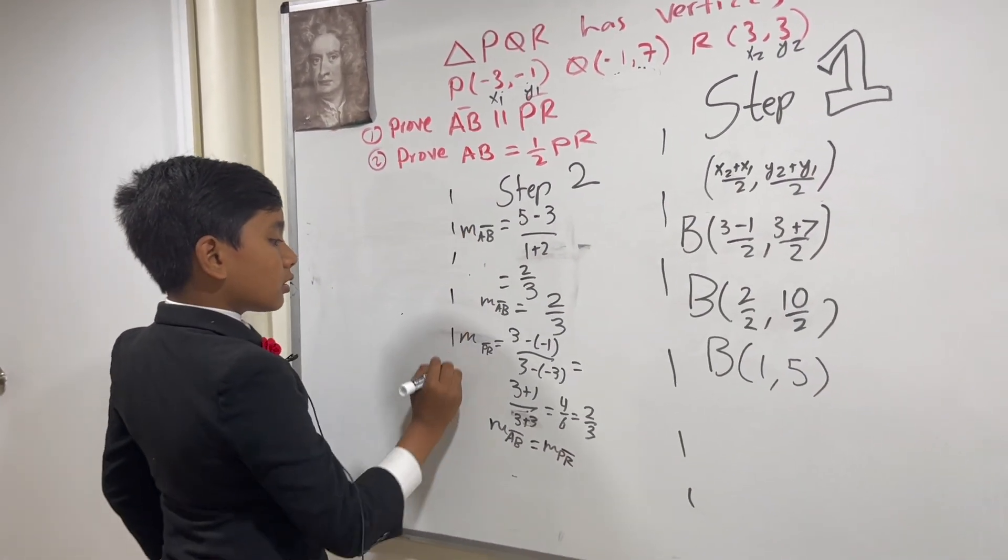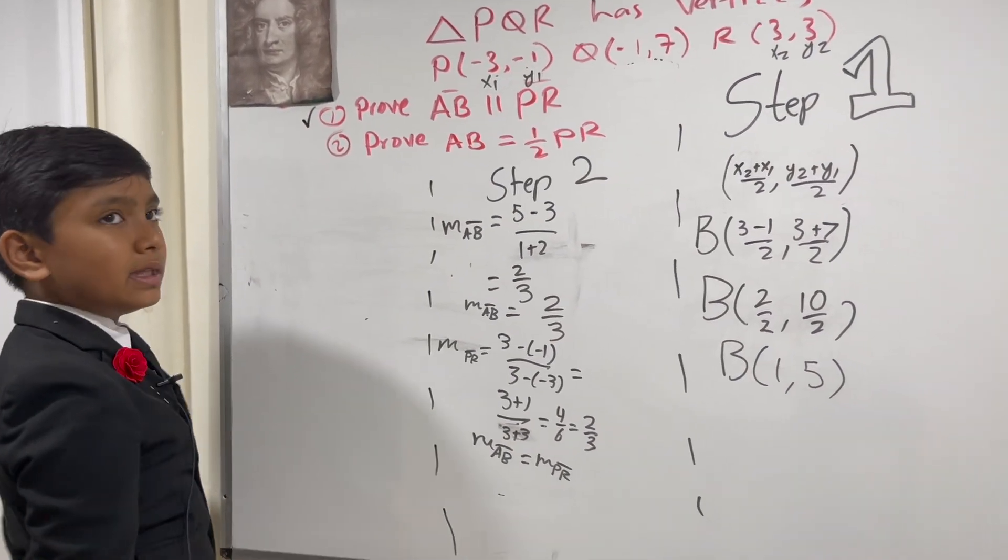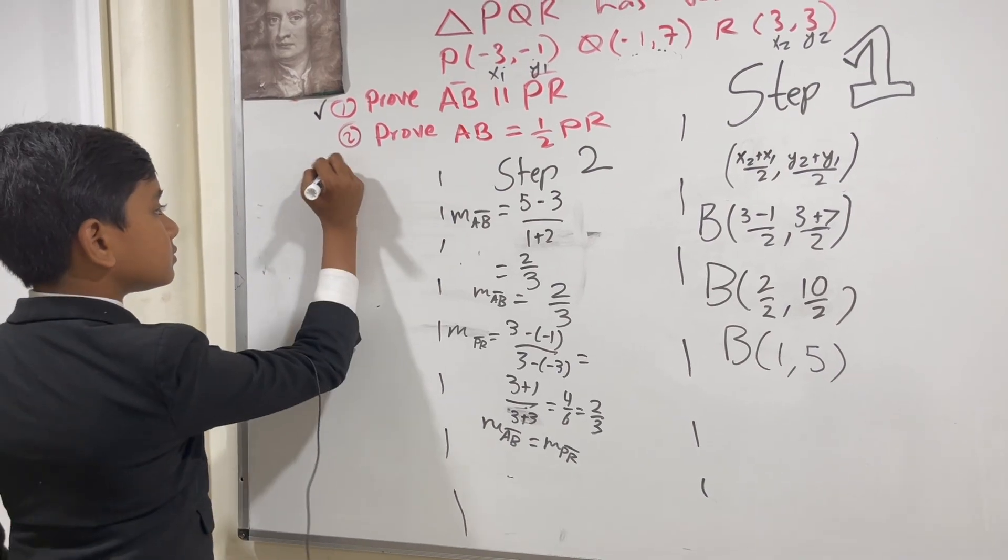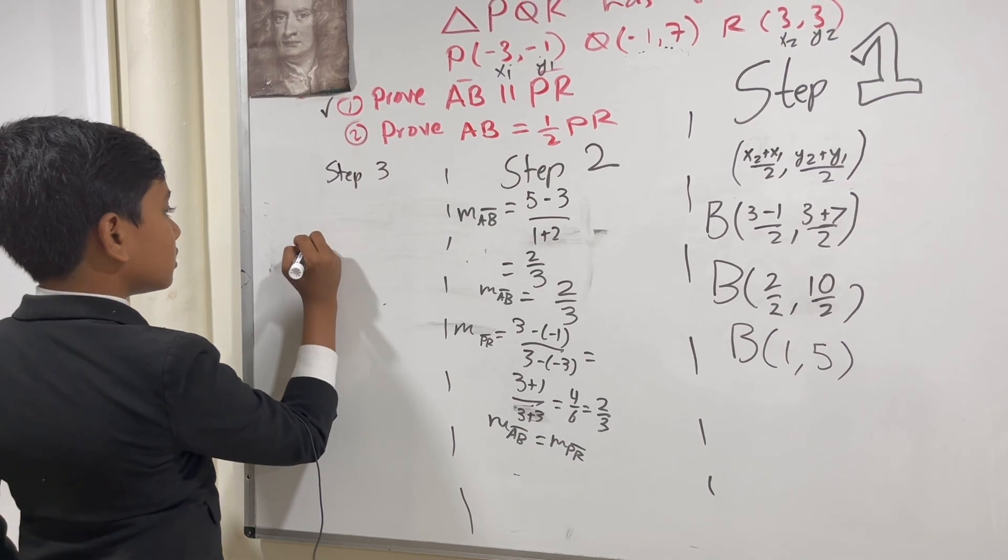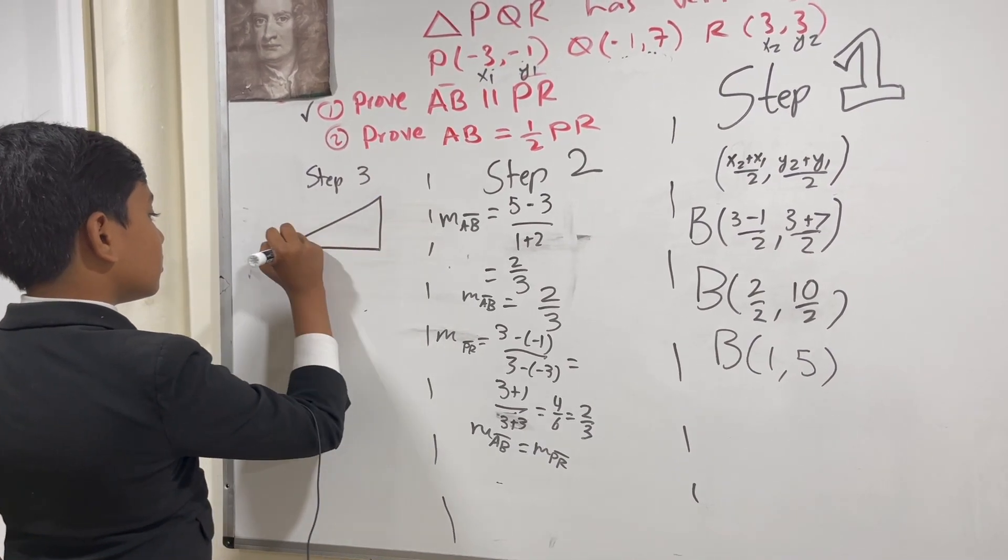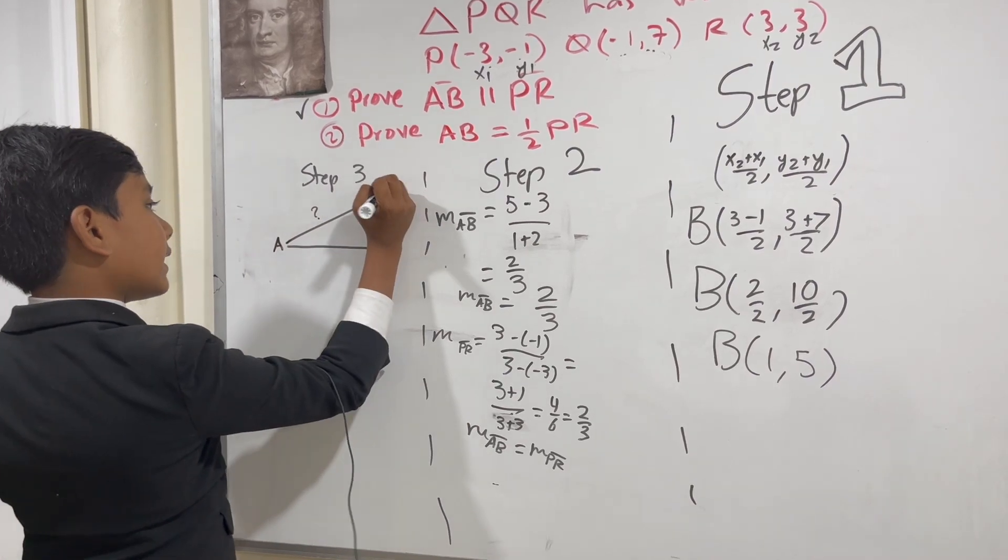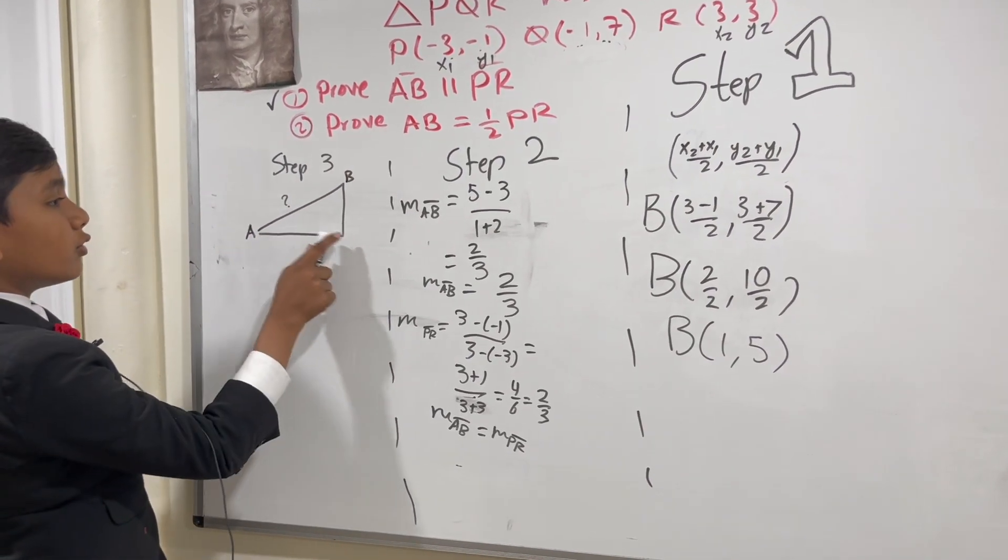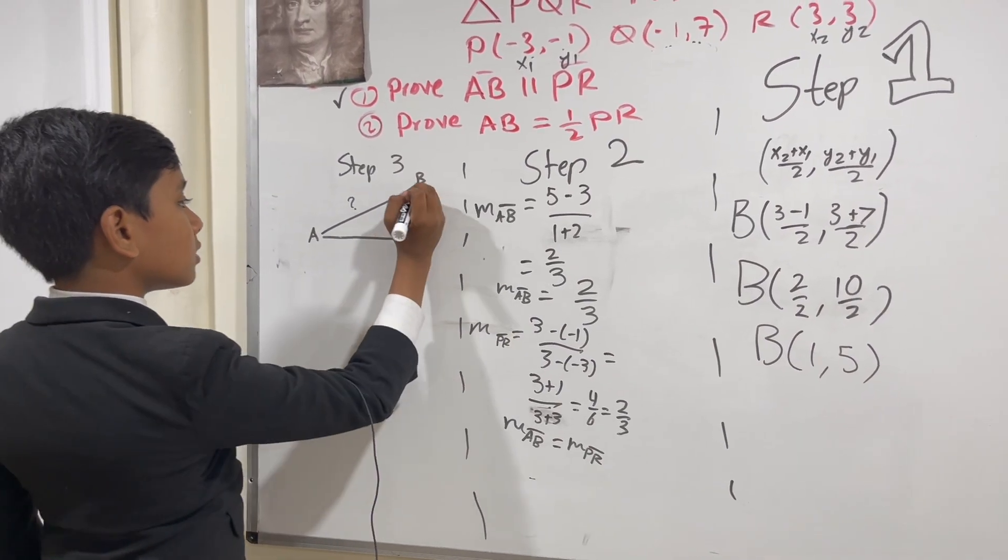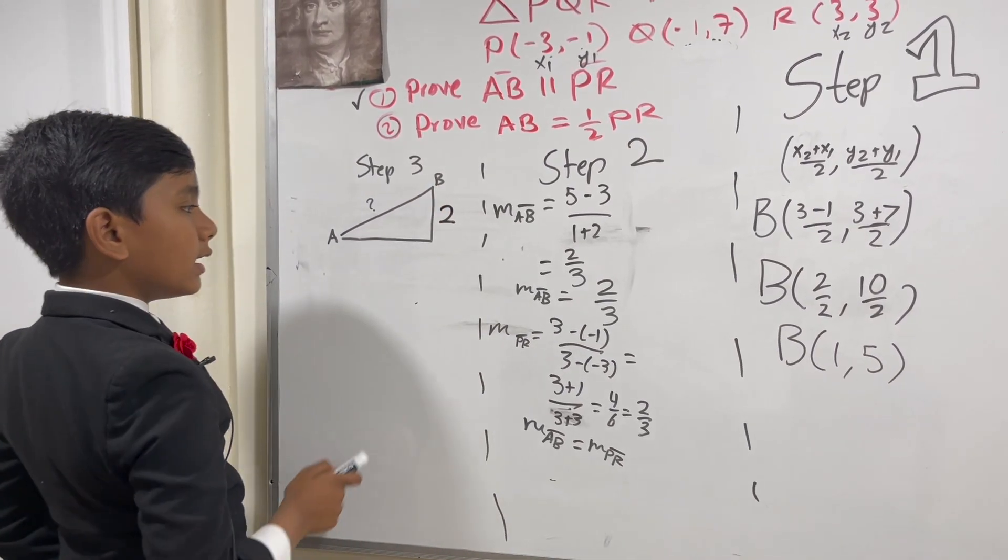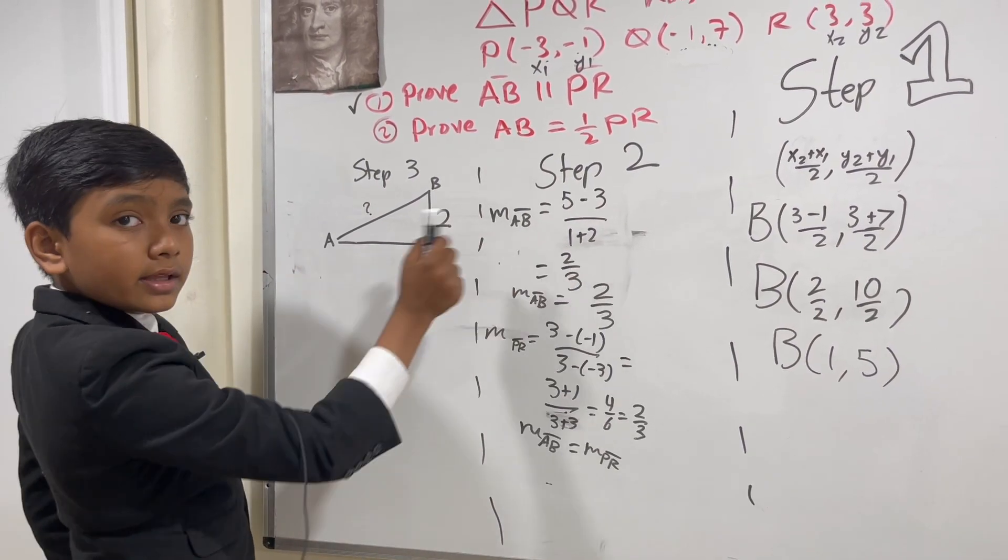Now we're going to move on to step 3, which is proving number 2: AB equals half of PR. So let's say we have to find this distance. So this is A and that is B. The difference over here is 5 minus 3, which is 2. And the difference over here is 1 from negative 2, which is 3.